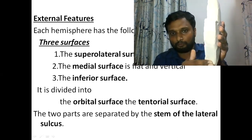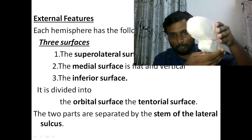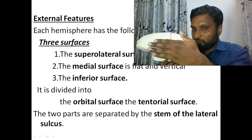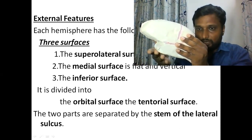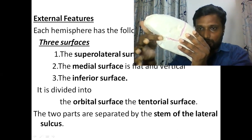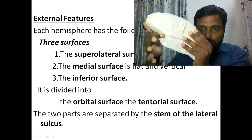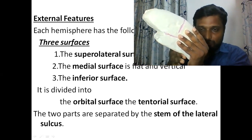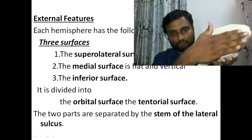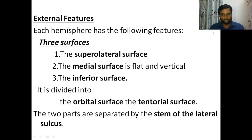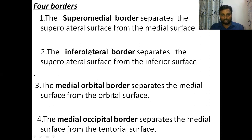So to summarize the surfaces on this left hemisphere model: the supralateral surface faces upward and laterally; the inferior surface has two parts — the orbital part and the tentorial part, separated by a groove; and the medial surface faces inward. So each cerebral hemisphere has these three surfaces: supralateral, medial, and inferior.